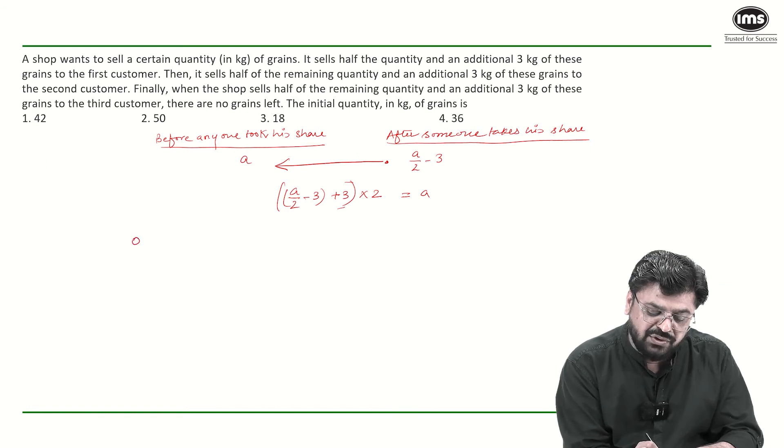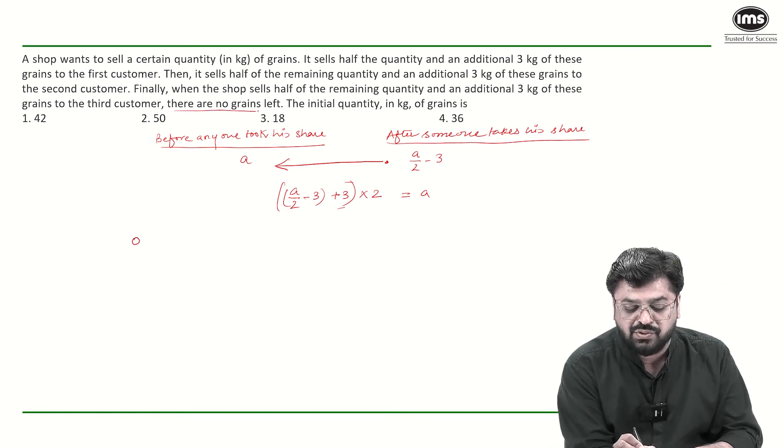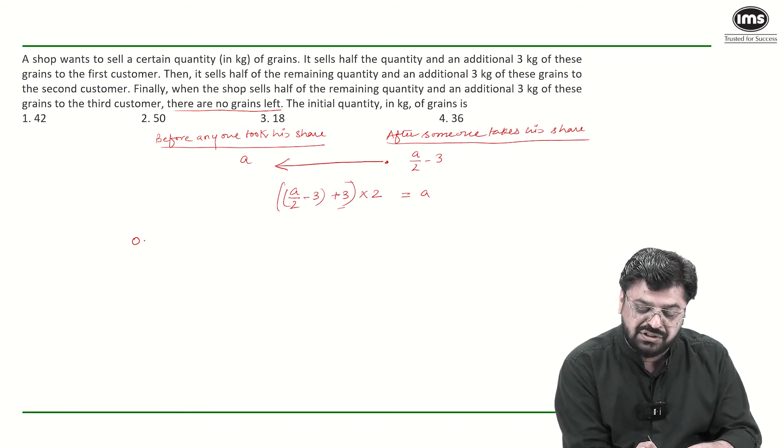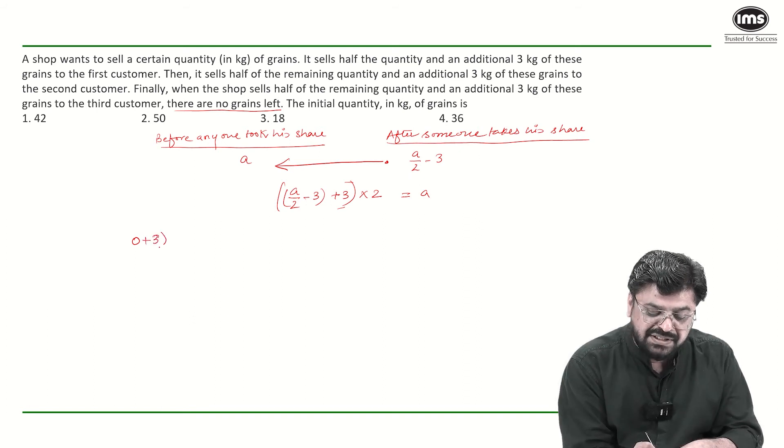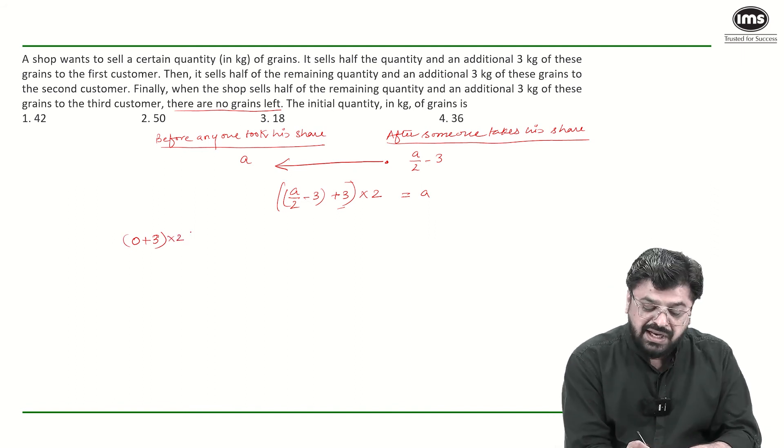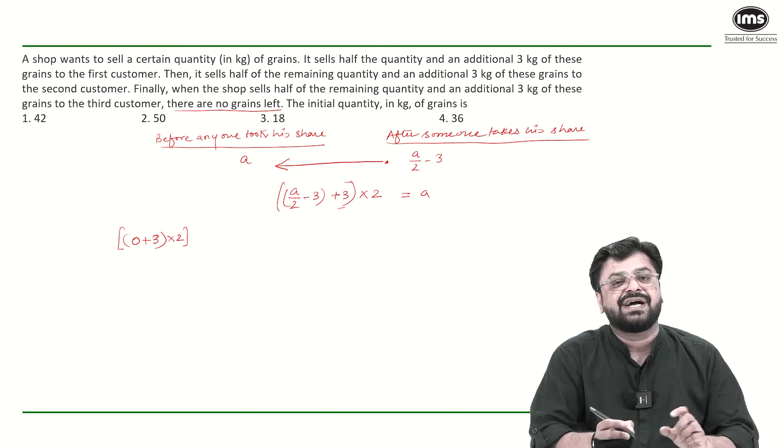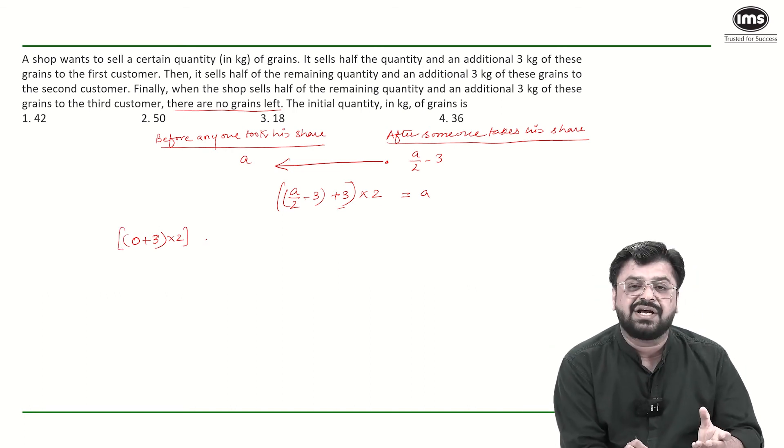So, in the end, it was 0, there was no grain left, which means before this guy took a share, it should have been plus 3 into 2. And this was when the second guy took a share, or second guy got a share.